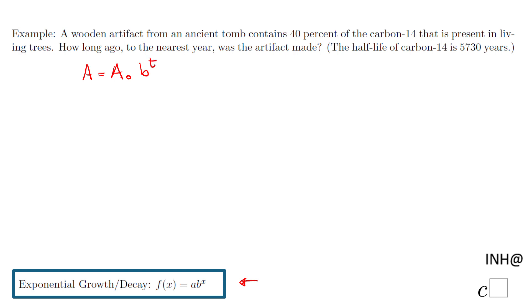A is the amount of carbon-14 now after a period of time, A₀ is what was initially present, b is the exponential base of the exponential function, and t is the time.